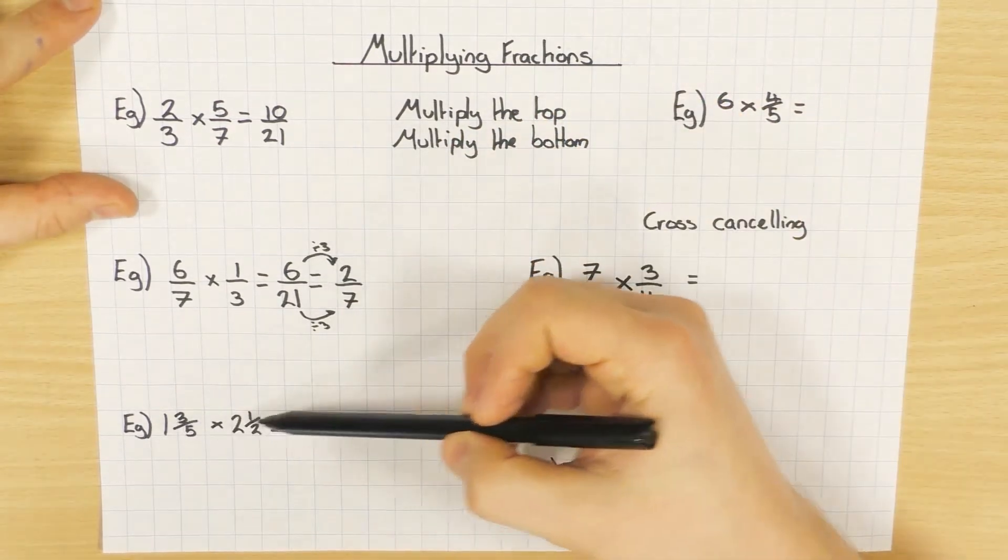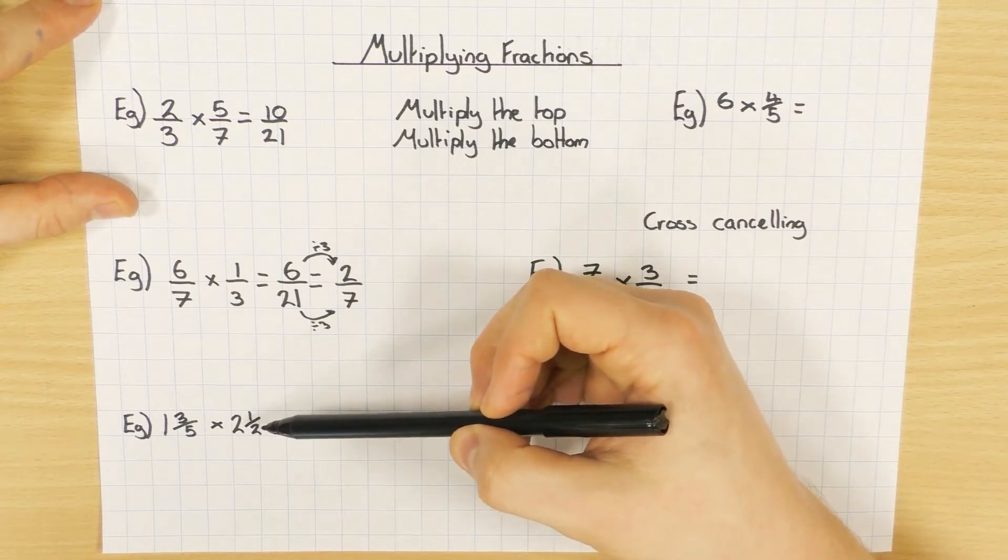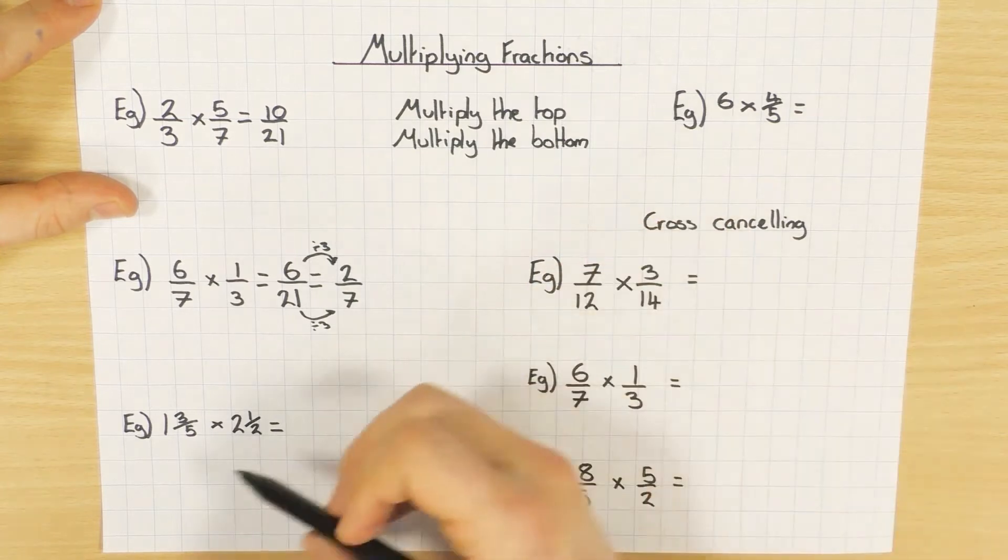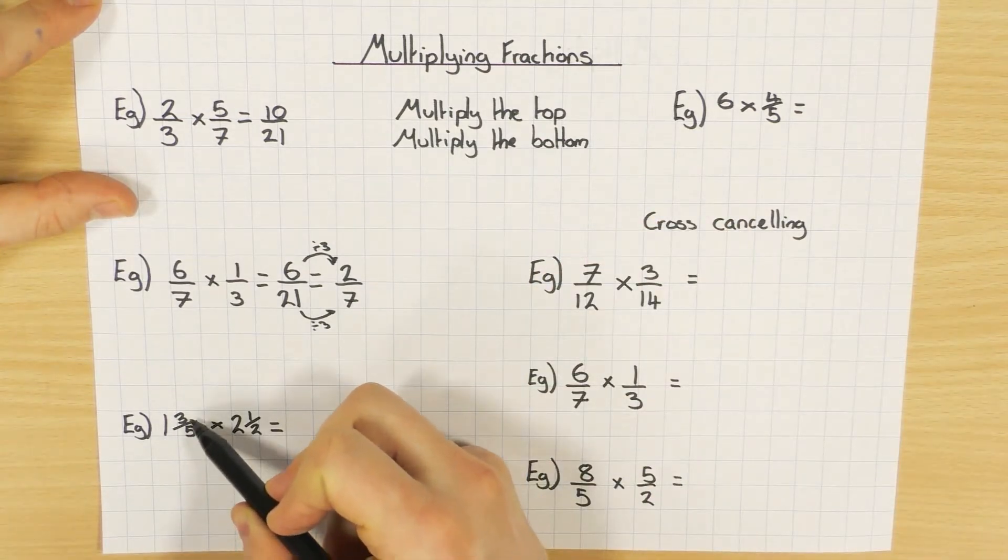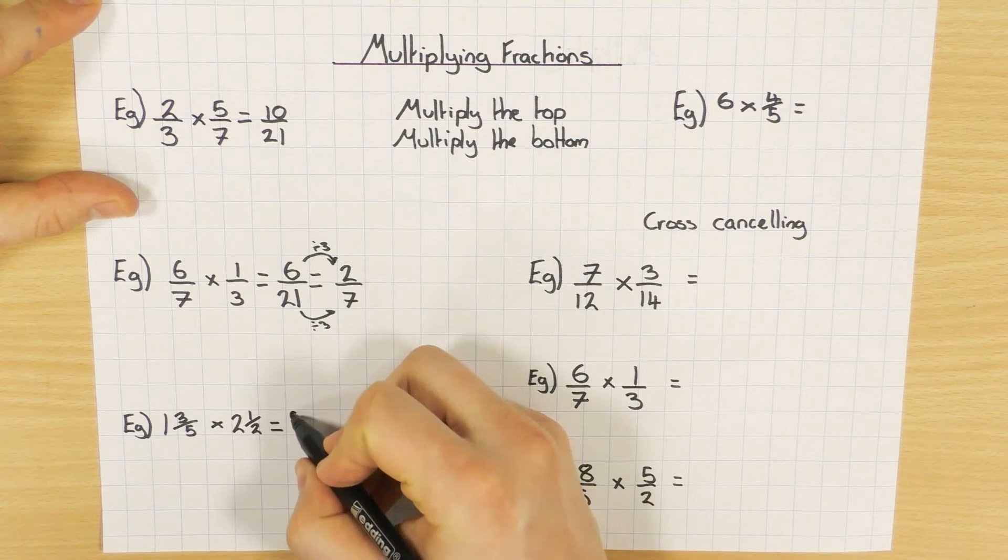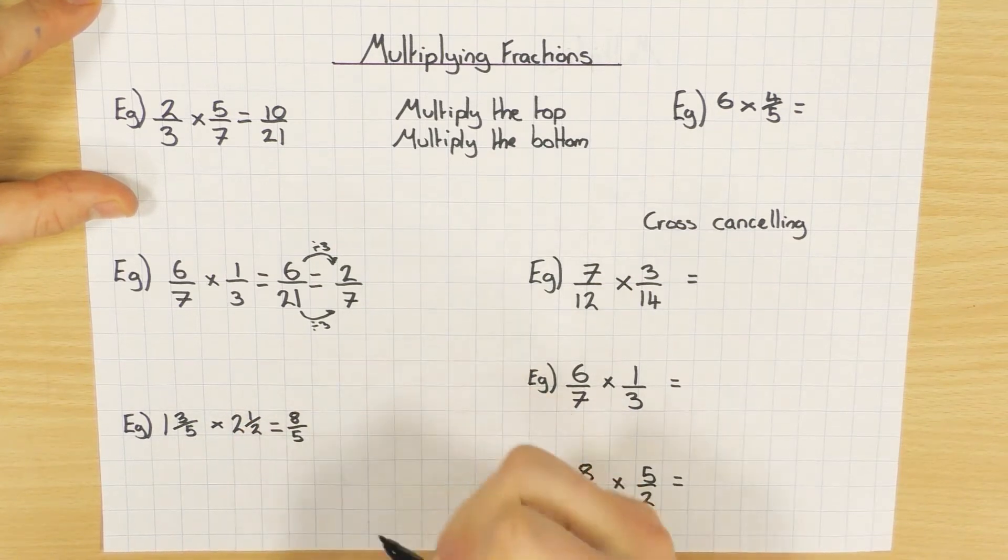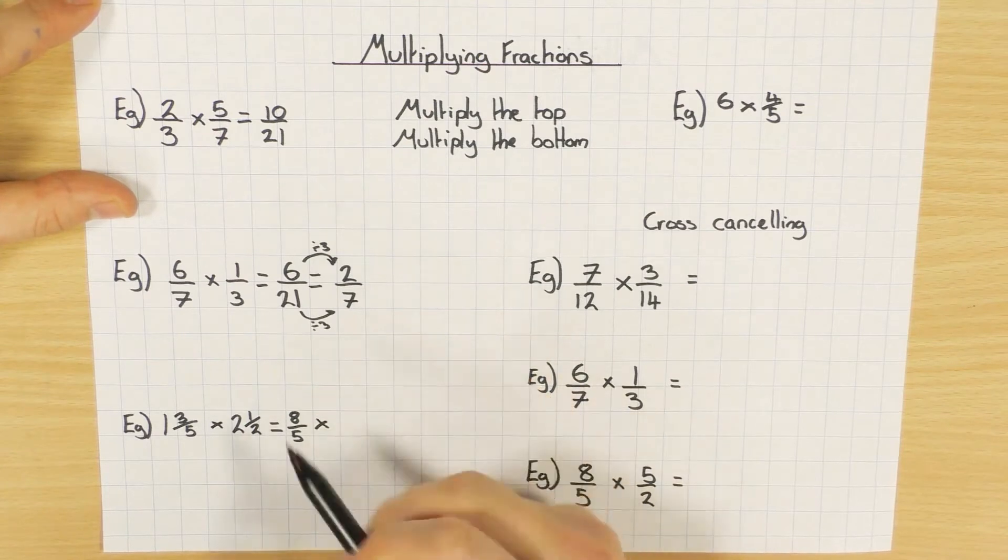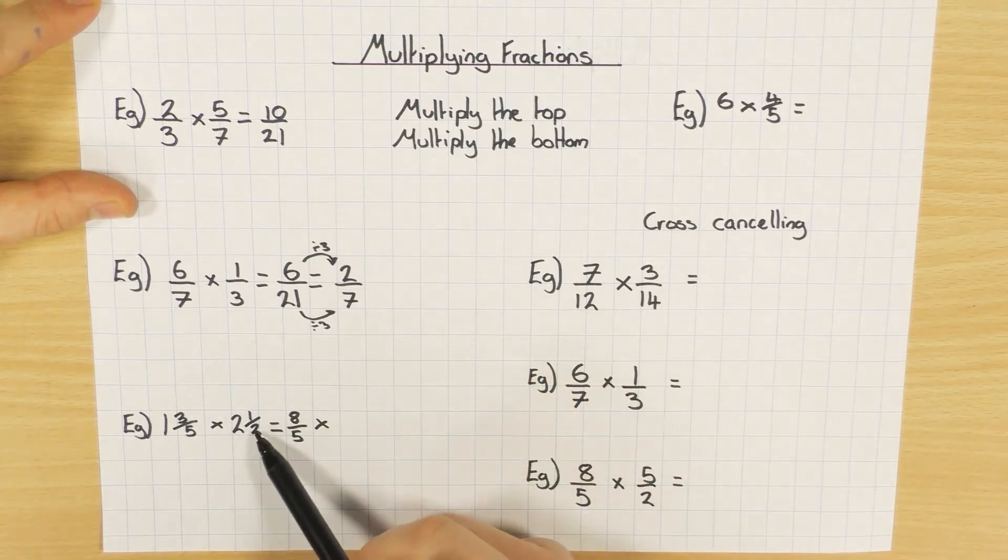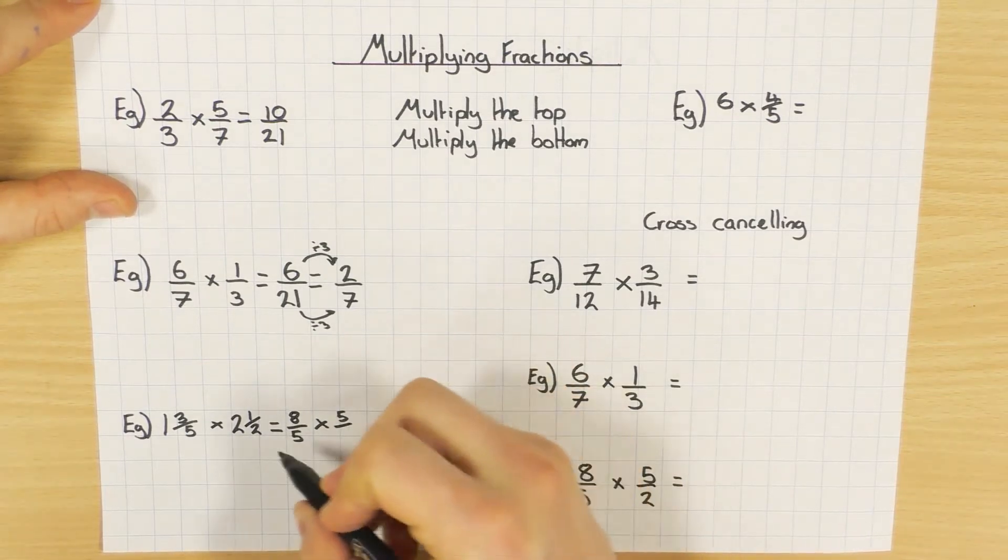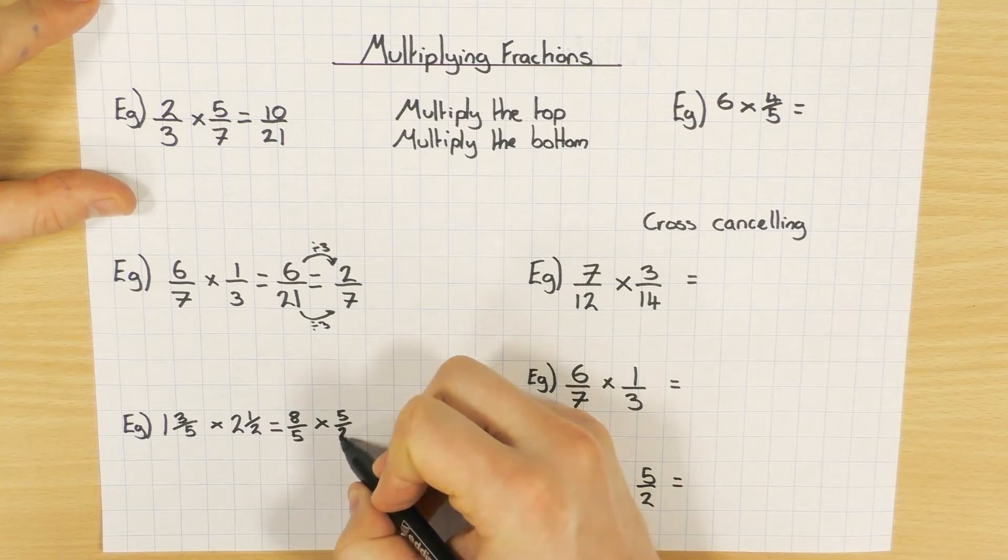If you have two mixed fractions, like so, always, always convert them back into top-heavy. So 1 times 5 is 5, add 3 is 8. And the denominator, the bottom number there, stays the same as 5. And convert this one to top-heavy or improper. 2 times 2 is 4, plus 1 is 5. So 5, and again that bottom number, the denominator there, stays the same.